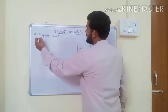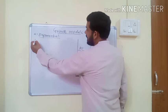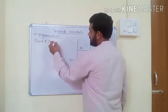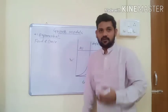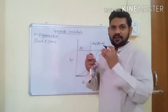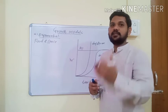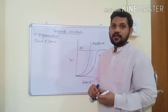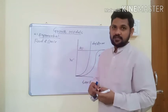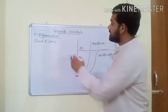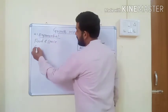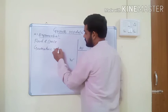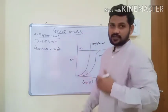Exponential growth model: when food and space for a population are unlimited, then every species has the ability to realize its reproductive potential and they produce new offspring. In such cases, the population increases exponentially, or in geometric ratio, because the resources are unlimited.